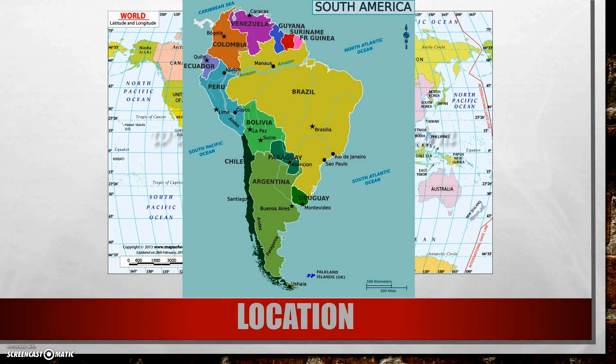If I was going to use relative location, I could use other countries or points of interest to describe where things can be found. So if I say the capital of Colombia is Bogotá, I've used relative location because I've explained that Bogotá can be found in Colombia. I may say Paraguay is northeast of Argentina. I could describe Chile as a narrow nation along the coast of the Pacific Ocean — those are all examples of relative location.